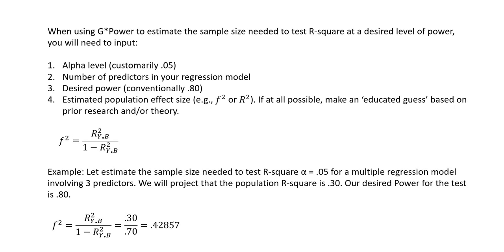Given these two layers of tests, it makes sense to conduct your power analysis with both in mind. We're going to start off with estimating the sample size needed to test the model R-square at a desired level of power. Using G-Power there are several inputs you will need: the alpha level (conventionally 0.05), the number of predictors in your regression model, your desired level of power (conventionally around 0.80), and an estimate of the population effect size — ideally based on prior research and theory.